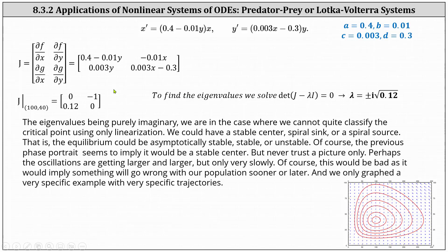Now we consider the critical point (100, 40), where the Jacobian matrix has entries 0, negative 1, 0.12, 0. In this case, the eigenvalues are lambda equals plus or minus i times the square root of 0.12. Notice the eigenvalues are purely imaginary, which is the case where we cannot quite classify the critical point using only linearization. We could have a stable center, a spiral sink, or a spiral source — that is, the equilibrium could be asymptotically stable, stable, or unstable.